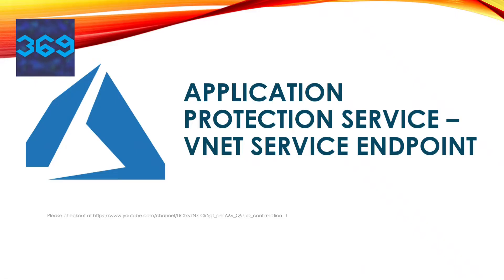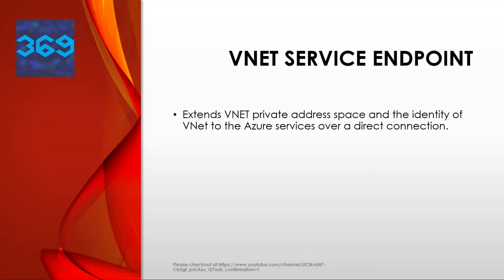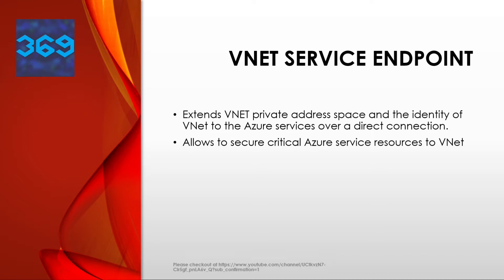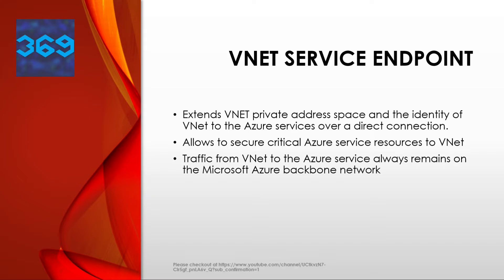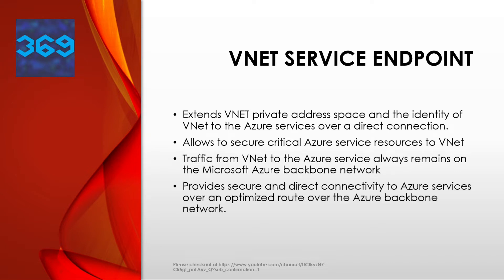Welcome back. In this session we are going to talk about the VNet service endpoint, which is part of the application protection service. VNet service endpoint extends VNet private address space and the identity of VNet to the Azure service over a direct connection. Service endpoints enable private IP addresses in the VNet to reach the endpoint of the Azure service without needing a public IP address on the VNet. Service endpoints allow you to secure critical Azure service resources to only virtual networks. Traffic from VNet to the Azure service always remains on the Azure backbone network.